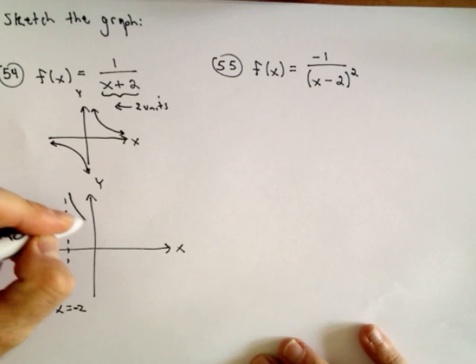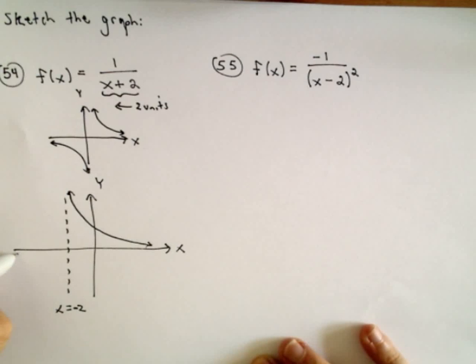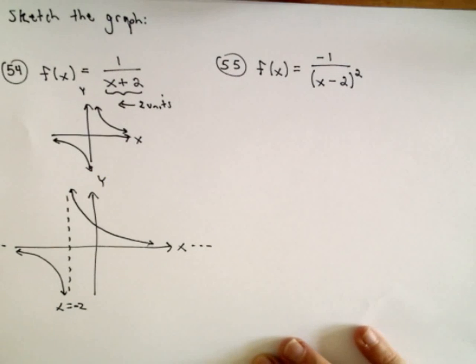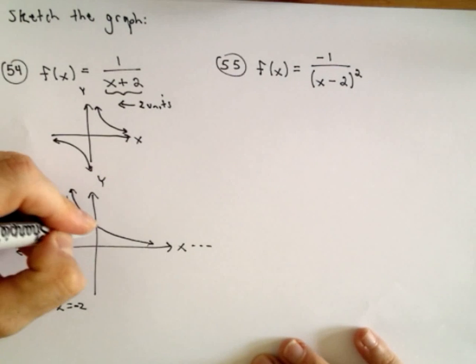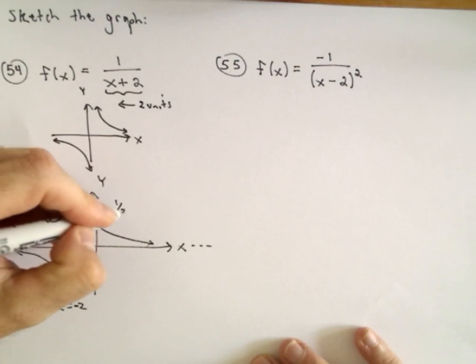And then, we'll still just have that same basic shape. And recall that this function also has a horizontal asymptote of the x-axis. You can even plot an extra point. If you plug in x equals 0, that would be the point 1 half.